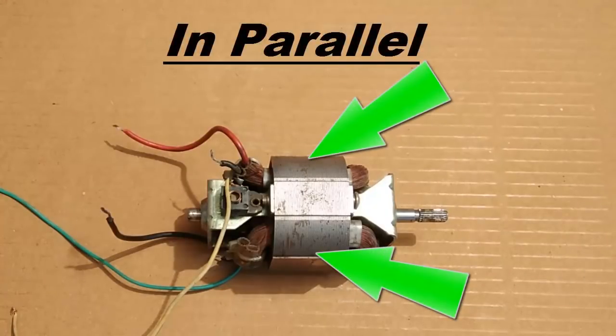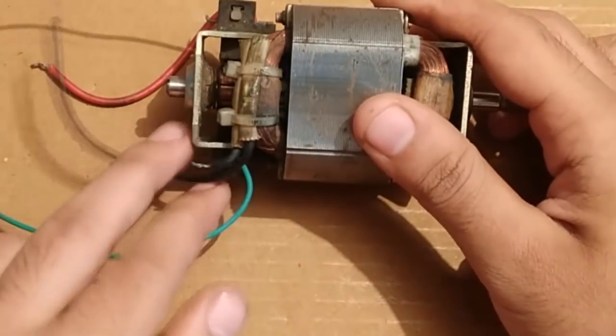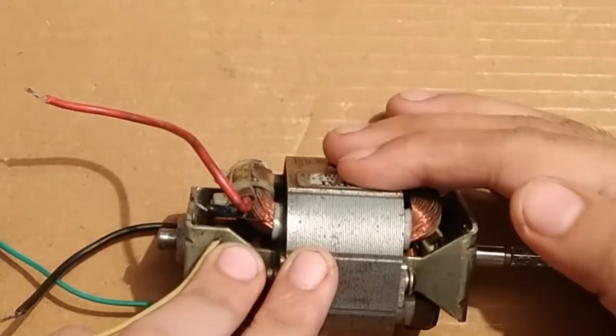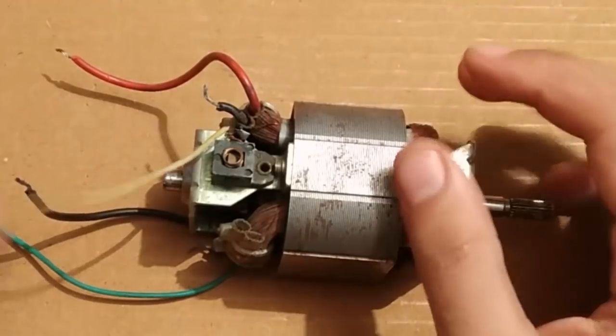So in order to convert this motor into a generator, what I am going to do is connect the field windings in parallel. So these are the two wires from the field pole of this and these are the two wires from the field pole of this. So I am going to connect it in parallel.